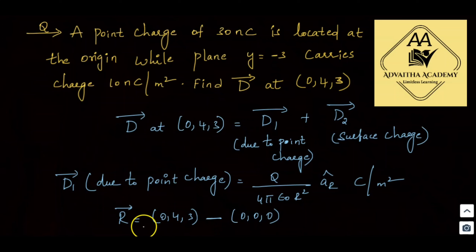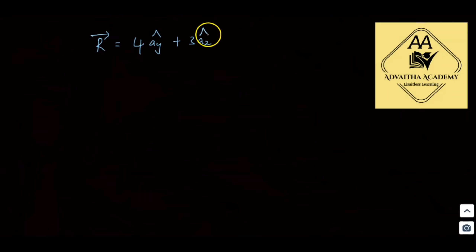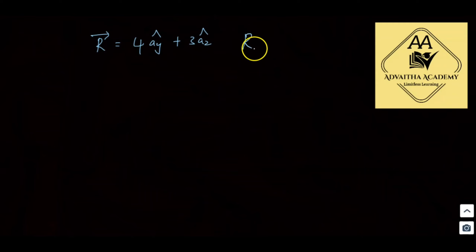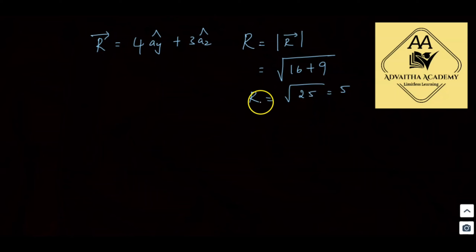So r̄ is very important here. The point of interest is (0, 4, 3), and the point charge is at (0, 0, 0). So r̄ = (0,4,3) − (0,0,0) = 4aŷ + 3aẑ. The magnitude r = √(4² + 3²) = √(16 + 9) = √25 = 5. Now substitute into the formula.